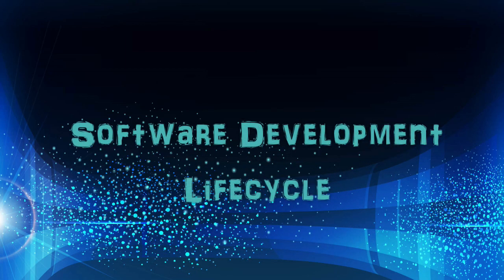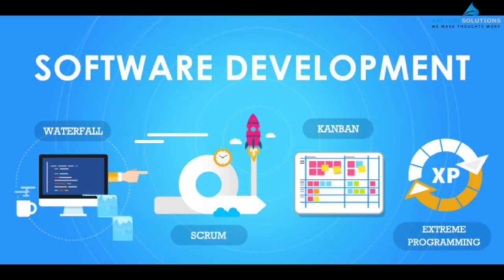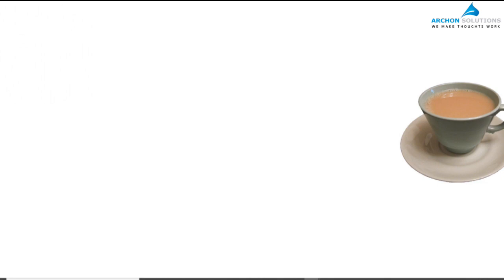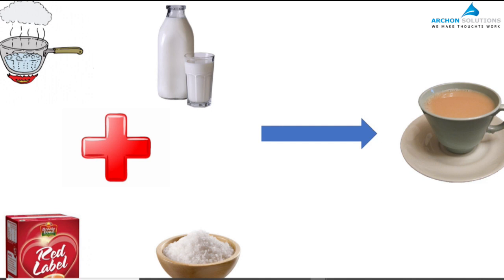Today's topic is the software development life cycle — in other words, what is the life cycle followed during software development? Everything we do in our day-to-day life has a life cycle involved in it. Knowingly or unknowingly, we follow a life cycle or a pattern. For example, we make tea or coffee every morning. The steps for making tea include boiling water, adding milk, adding tea powder, and adding sugar. The order in which the ingredients are added is the life cycle of the tea-making process.